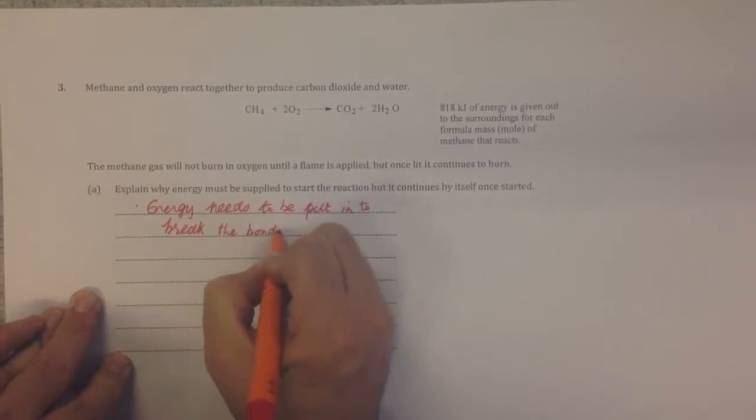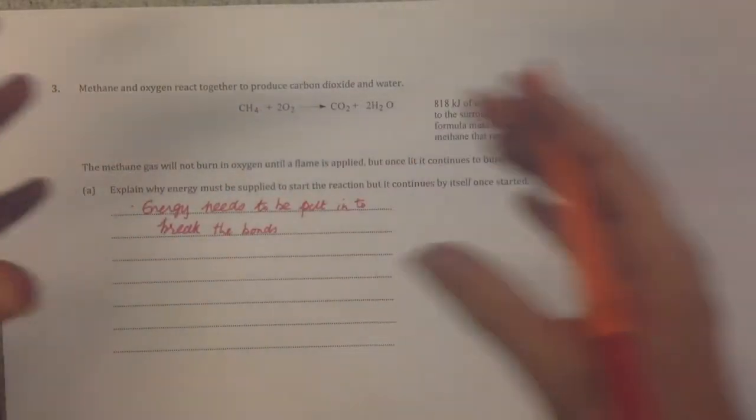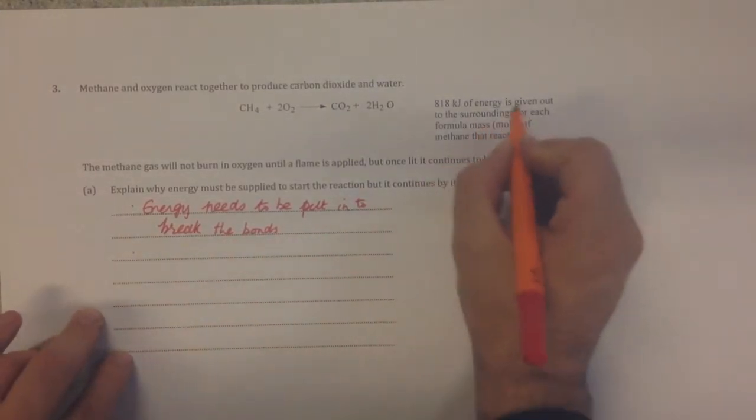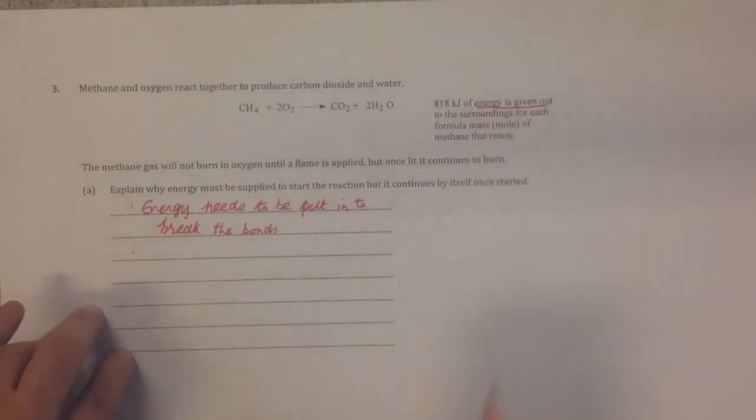Remember, before you can have a chemical reaction, you've got to break the bonds so they can rearrange to give us our products. We're told energy is given out, so we know it's exothermic.